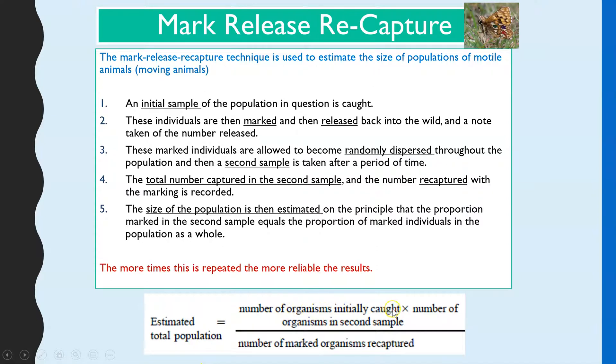Number of organisms initially caught multiplied by the number of organisms in the second sample, divided by the number of marked organisms recaptured. So let's see in action.